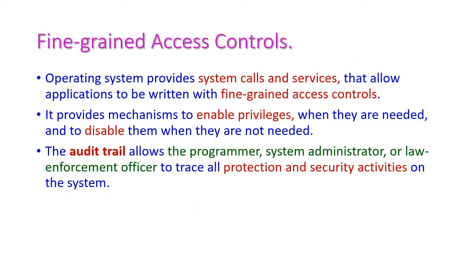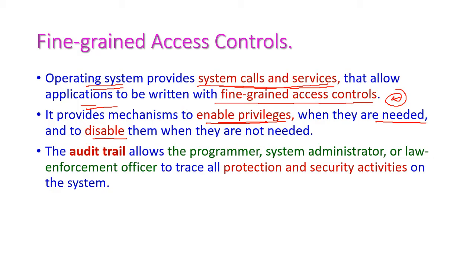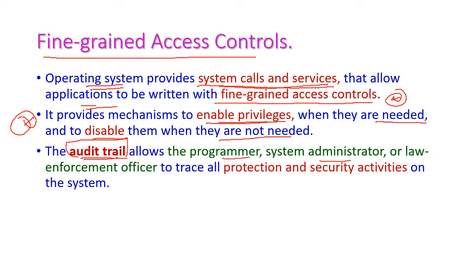Next, let us see fine-grained access control. The operating system provides system calls and services, which allow applications to be written with fine-grained access control. This technology enables privileges when users need them and disables privileges when they are not needed. For this purpose, fine-grained access control is important. The audit trail allows the programmer, system administrator, or law enforcement officer to trace all protection and security activities on the system.